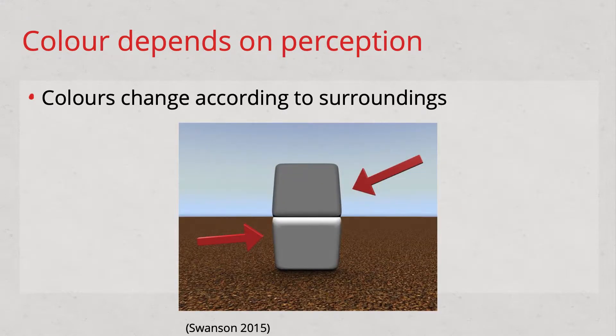We'll talk about this more when we discuss additive colour later in this presentation. So the rods detect just light, while the cones detect colour and tell our brain what colour we're seeing. However, it's up to our brain to then interpret what that means. Colours can change according to surroundings because our brain will interpret them a little differently. Even in the same light, the same colour can look completely different depending on what colour is placed next to it. Since we rarely see one colour in isolation, designers need to consider how the colours they use will react to one another.